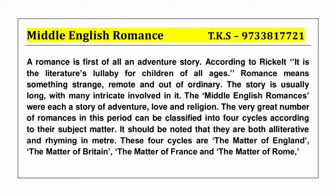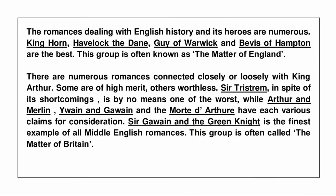The very great number of romances in this period can be classified into four cycles according to their subject matter. It should be noted that they are both alliterative and rhyming in meter. These four cycles are: the Matter of England, the Matter of Britain, the Matter of France, and the Matter of Rome. The romances dealing with English history and its heroes are numerous, and this group is often known as the Matter of England.